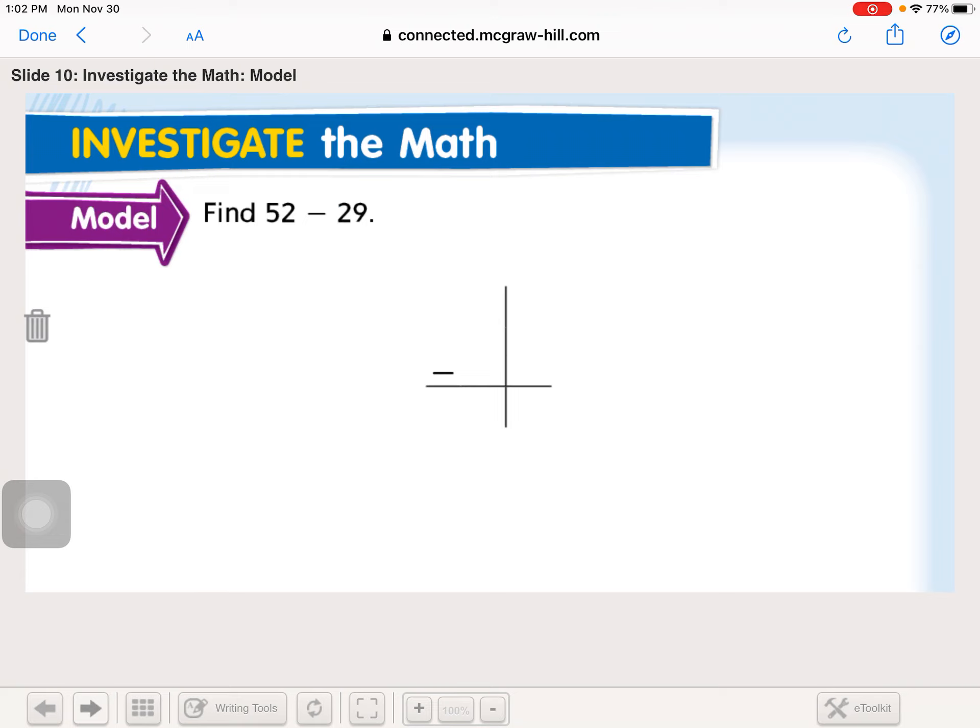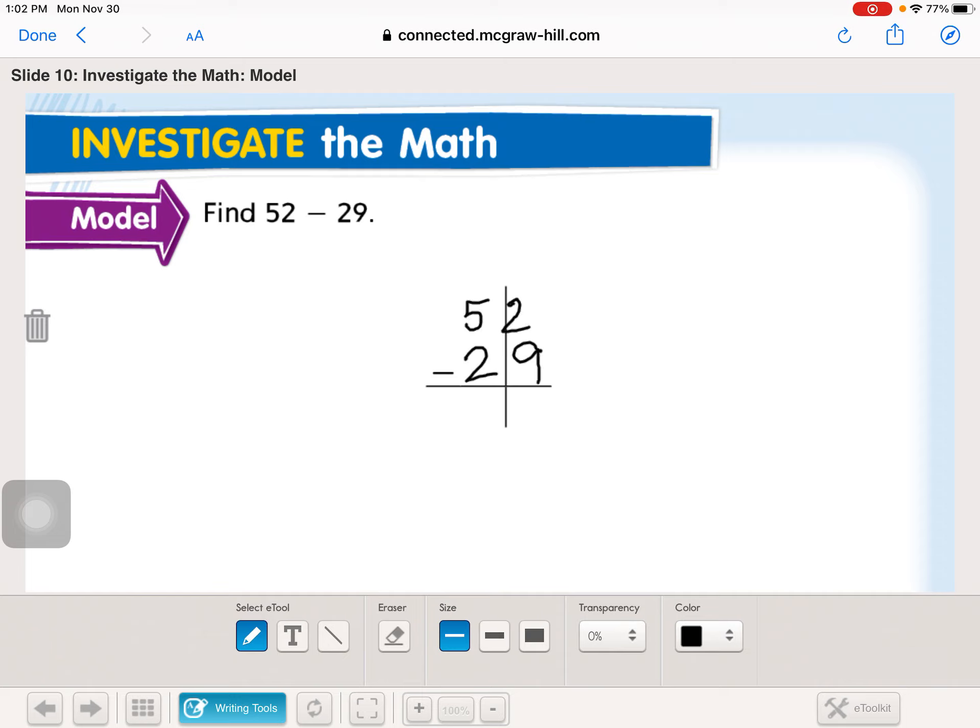So we're going to find 52 minus 29. So 52 minus 29. We're going to ask ourselves in the ones, more on the top, more on the floor, more on the floor. Go next door. Hello, Mr. Five. Take a five, or take a ten, which leaves us with four. Break a ten, which leaves us with ten ones and two ones. 12 ones minus nine ones. 12 take away nine is three. Four take away two is two.